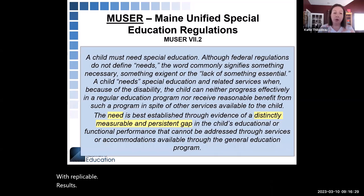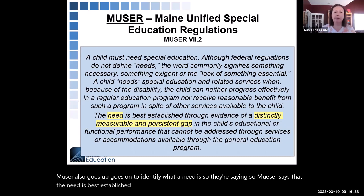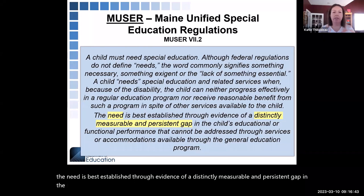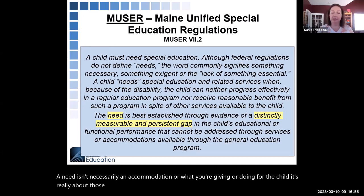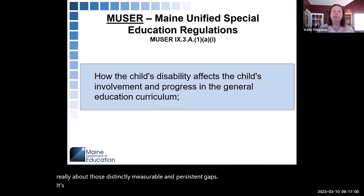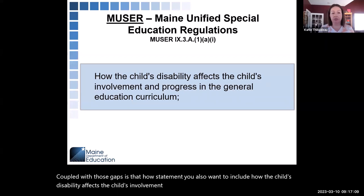MUSER also identifies what a need is — the need is best established through evidence of a distinctly measurable and persistent gap in the child's educational performance. A need isn't necessarily an accommodation; it's really about those distinctly measurable and persistent gaps. Coupled with those gaps is the how statement: how the child's disability affects the child's involvement and progress in the general education curriculum.